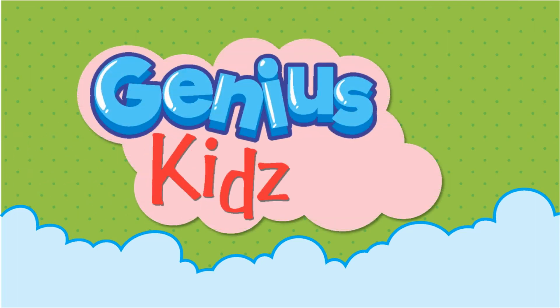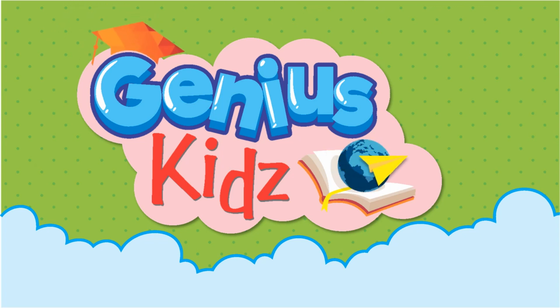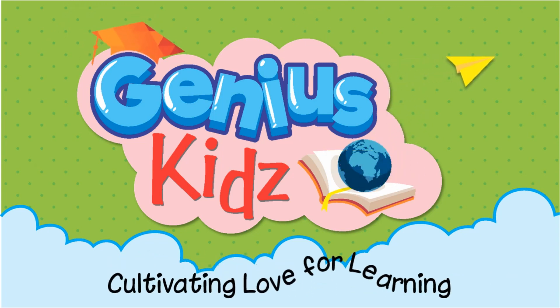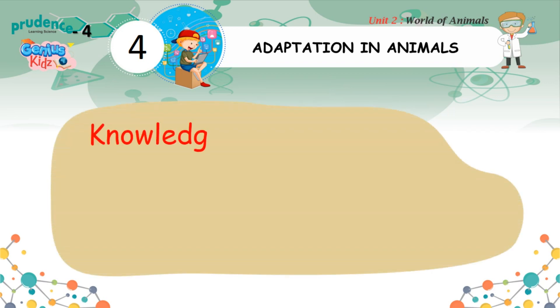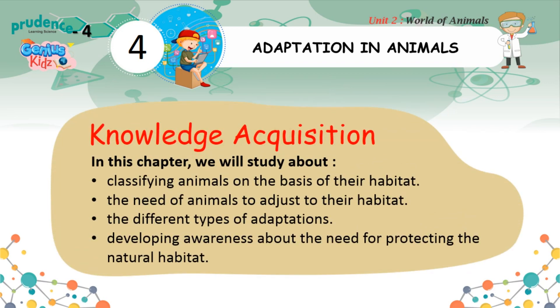Genius Kids — Cultivating Love for Learning. In this chapter on Adaptation in Animals, we will study about classifying animals on the basis of their habitat, the need of animals to adjust to their habitat, the different types of adaptations, and developing awareness about the need for protecting their natural habitat.